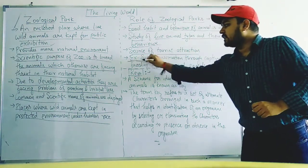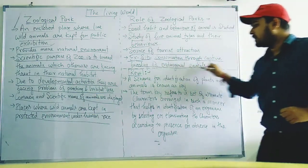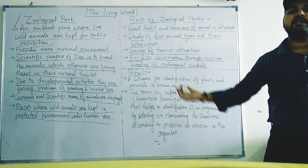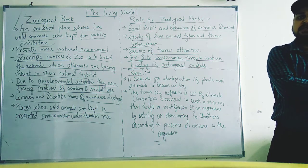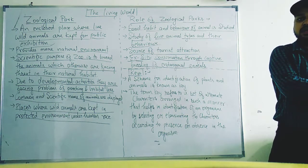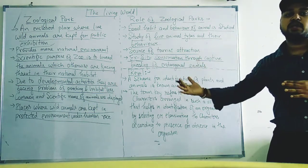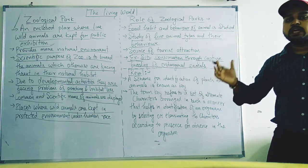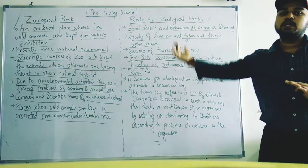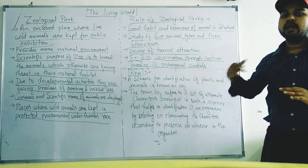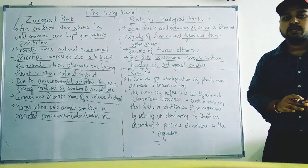Then there is ex-situ conservation. Ex-situ conservation means off-site conservation, carried out through captive breeding of endangered species. The forest, where animals live, is on-site conservation. If we breed them in other places, we call it ex-situ conservation. In the zoological park, we do ex-situ conservation — we breed particular endangered animals and increase their numbers.